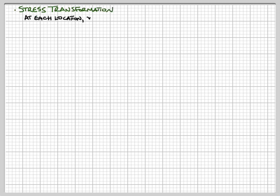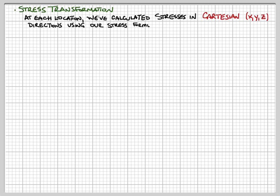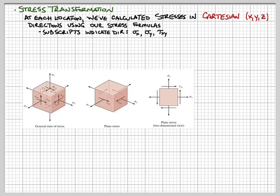The next topic is stress transformations. We've calculated stresses in Cartesian directions — x, y, z — because those are the directions our formulas apply to. The subscripts on the stresses indicate direction: sigma_x and sigma_y are normal stresses in the x and y directions, and shear stresses are defined on a certain plane in a certain direction. For a 3D stress state there are nine stress components — three normal stresses and three independent shear stresses, repeated in different directions.